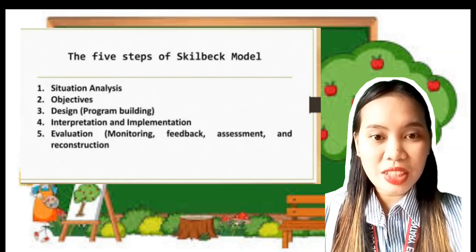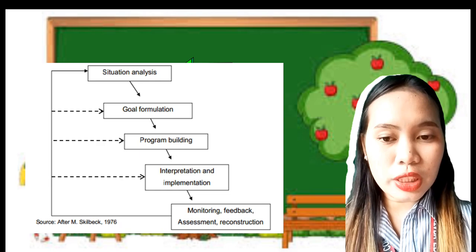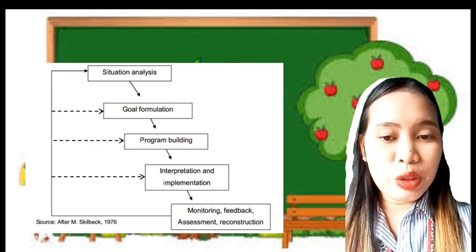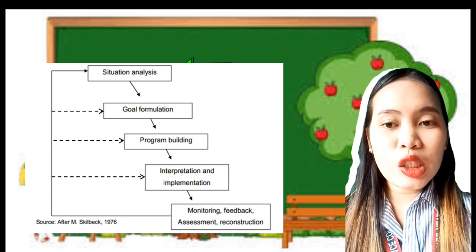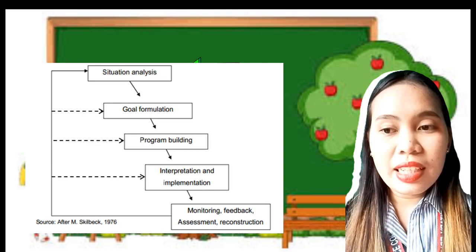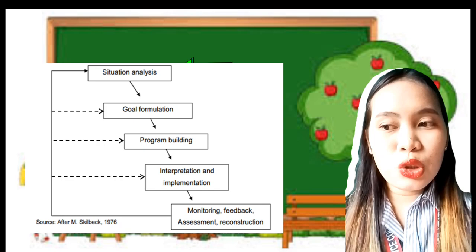The first step is situational analysis. Situational analysis is a process of examining factors that exist in the environment or society where the curriculum is implemented. It is described in two phases, external and internal. In external, it includes culture and social changes, while internally it covers the pupils' aptitudes, abilities, and defined educational needs, also the teacher's values, attitudes, and skills, and lastly the material resources.